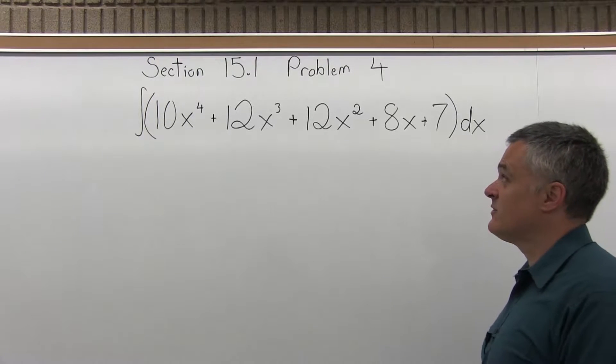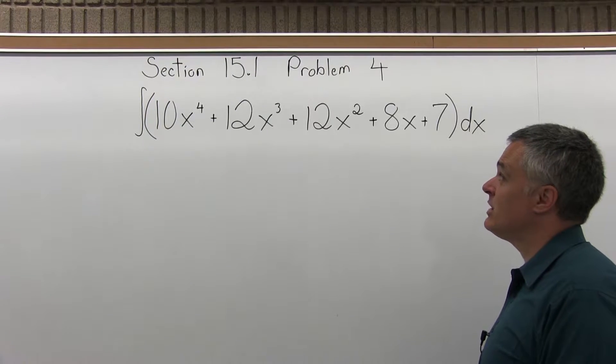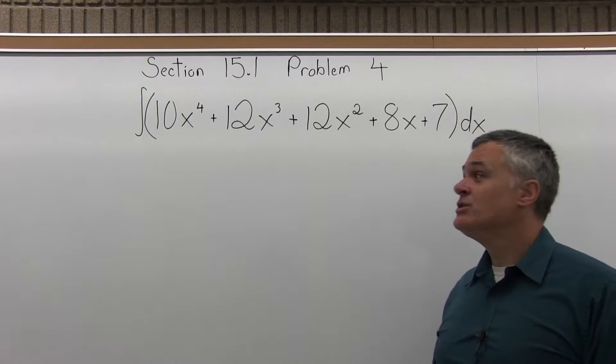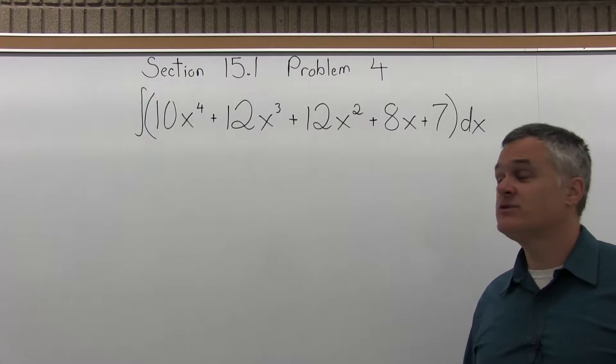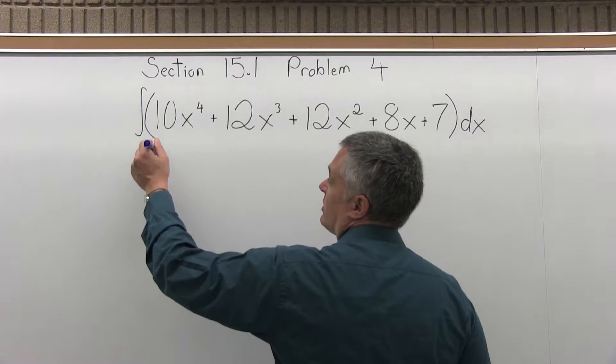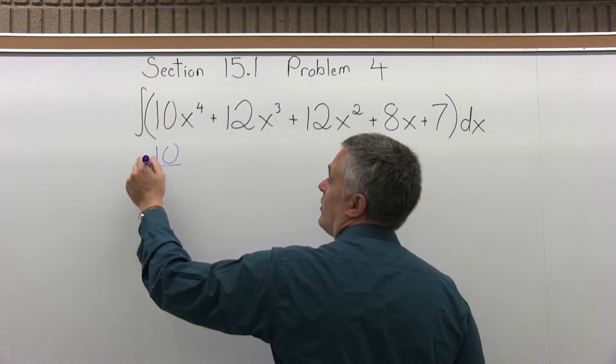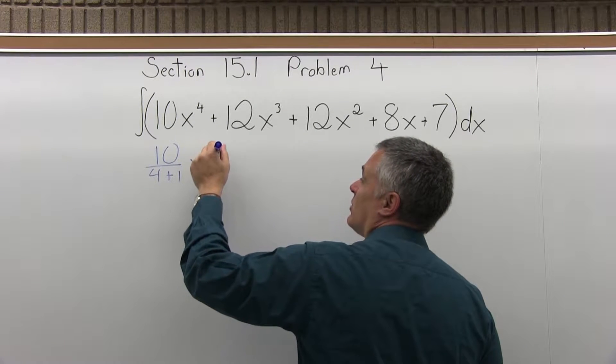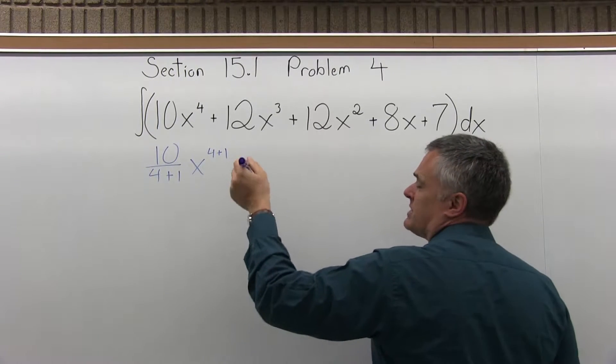We want to find the integral of 10x to the 4th plus 12x cubed plus 12x squared plus 8x plus 7. So this is kind of a long thing to take the integral of, just take it piece by piece. So the 10x to the 4th, you're going to go 10 over 4 plus 1, x to the 4 plus 1, and we'll simplify that in a minute.